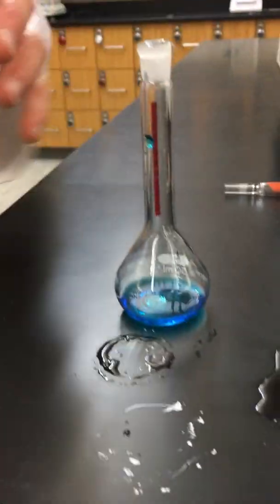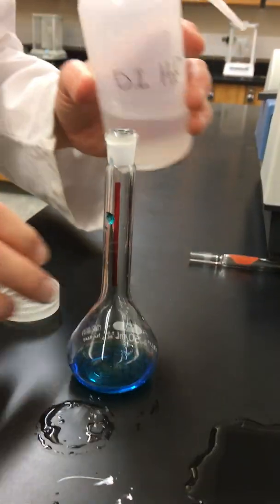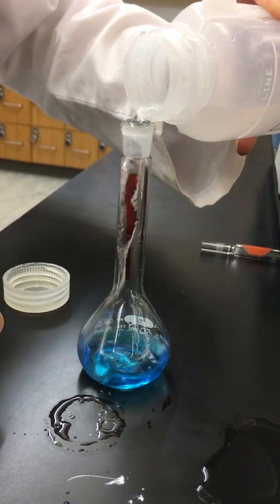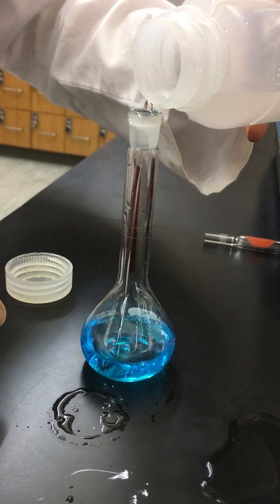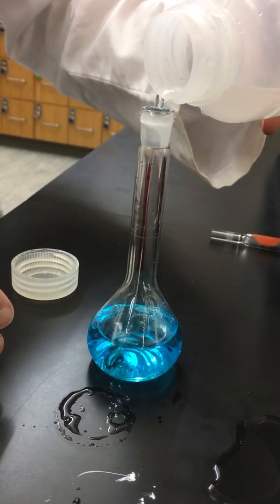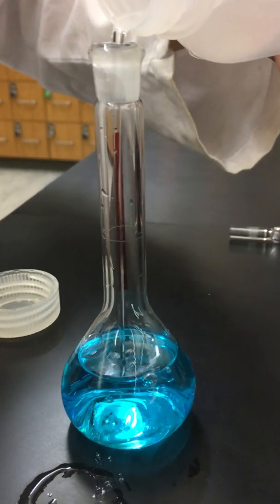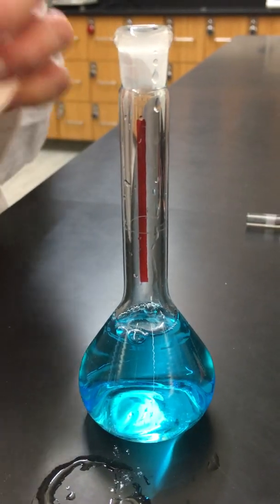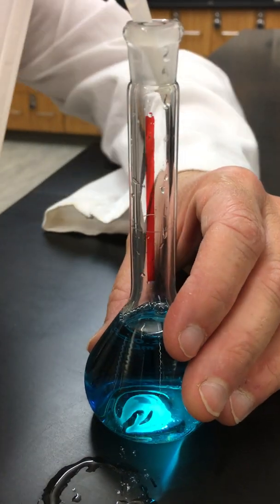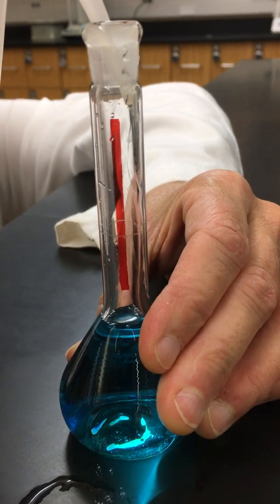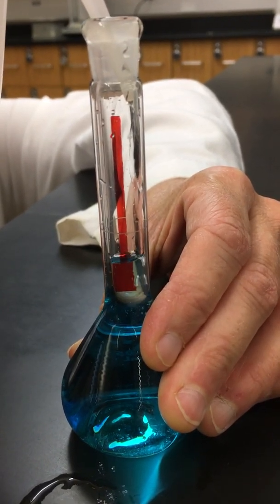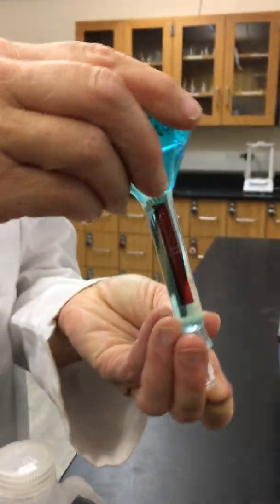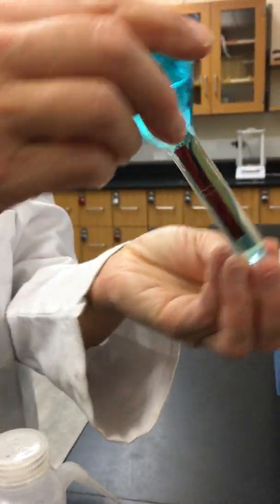Now we'll do the same thing for our next one. And again for that last little bit we'll add it slowly to make sure we have the bottom of the meniscus going right to the line. Mix it to give us a nice homogeneous mixture.